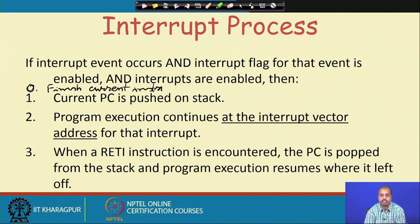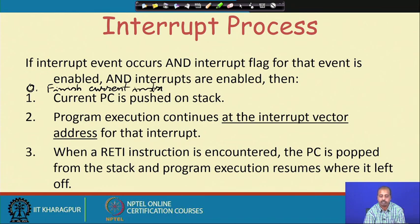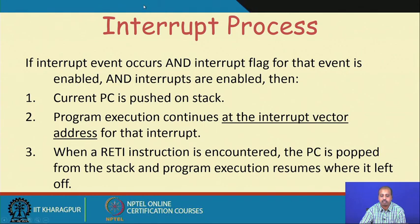If an interrupt event occurs, the interrupt flag for that event is enabled, and interrupts are enabled, then the interrupt will be recognized. Step 0 is finishing the current instruction. After that, the current program counter value is pushed onto the stack, and program execution continues at the interrupt vector address for that interrupt. When the RETI instruction is encountered, the program counter is popped from the stack and program execution resumes from the point where it was left off.